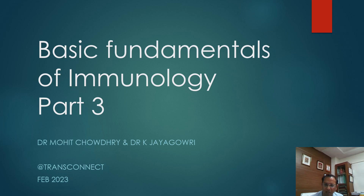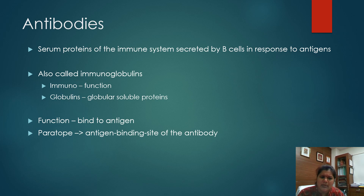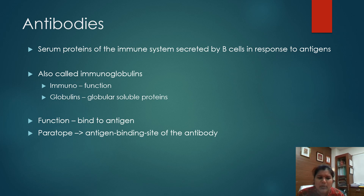I hand the presentation over to Dr. K. Jayagori who will be taking you through this. So in this video we will be covering about antibodies mainly. What are antibodies? They are nothing but the serum proteins of the immune system secreted by the B cells in response to antigens. These antibodies are also called immunoglobulins — 'immuno' based on their function of immunity, and 'globulins' meaning globular soluble proteins. The main function of antibodies is to bind to an antigen. The antigen binding site of the antibody is called the paratope, while the antibody binding site of the antigen is called the epitope.